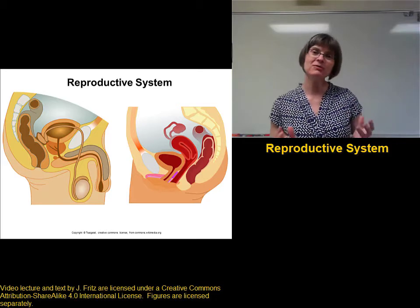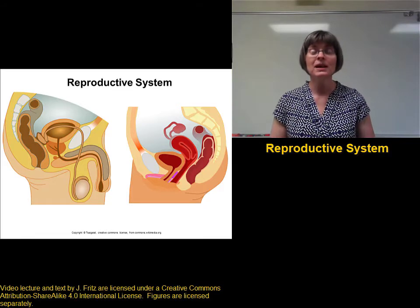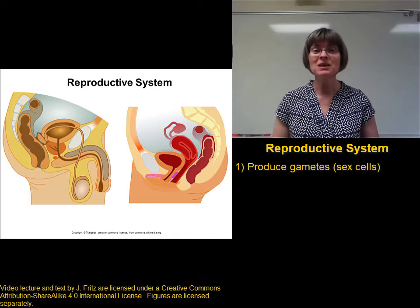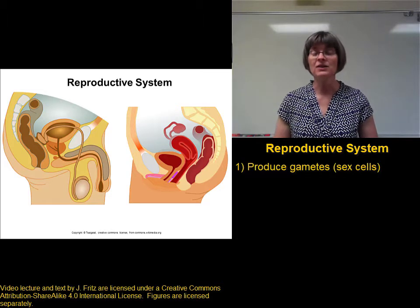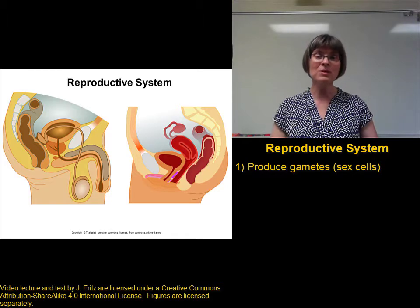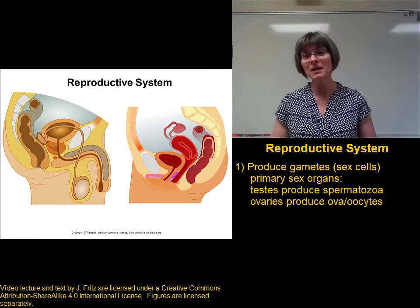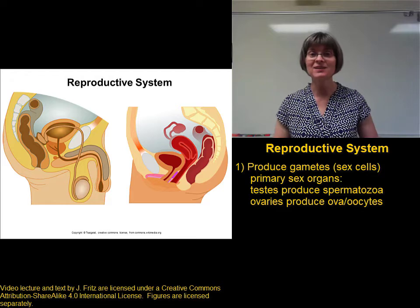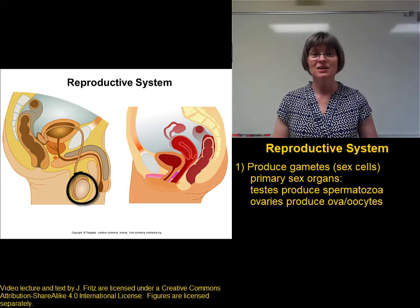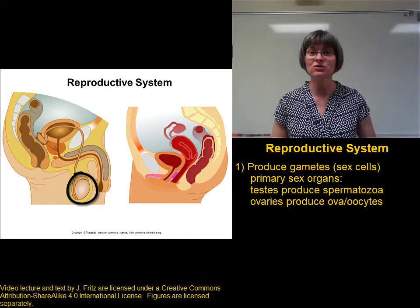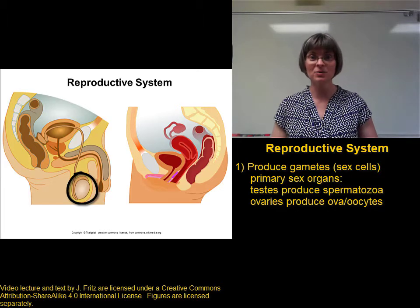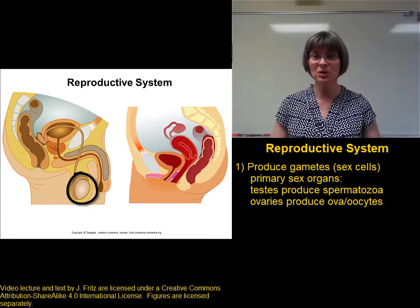The first main function of the reproductive system is to produce the gametes. The gametes are the sex cells, and the organs that make the gametes are considered the primary sex organs. In men, the primary sex organ is the testis, and the testis is the location of spermatogenesis, or the process that makes spermatozoa, also known as sperm.